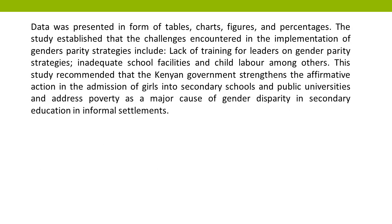Data was presented in the form of tables, charts, figures, and percentages. The study established that the challenges encountered in the implementation of gender parity strategies include lack of training for leaders on gender parity strategies, inadequate school facilities, and child labor, among others. This study recommended that the Kenyan government strengthen affirmative action in the admission of girls into secondary schools and public universities, and address poverty as a major cause of gender disparity in secondary education in informal settlements.